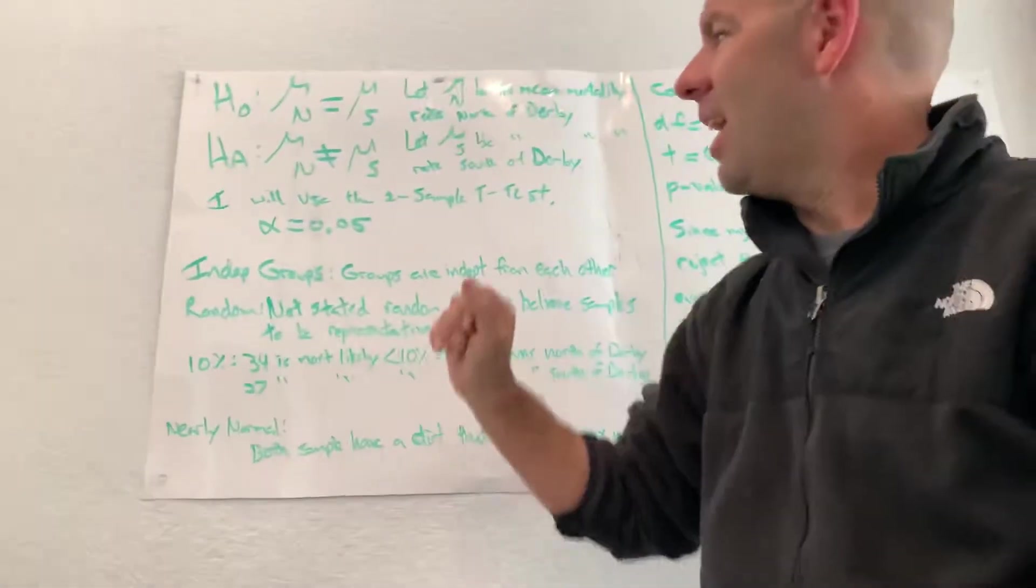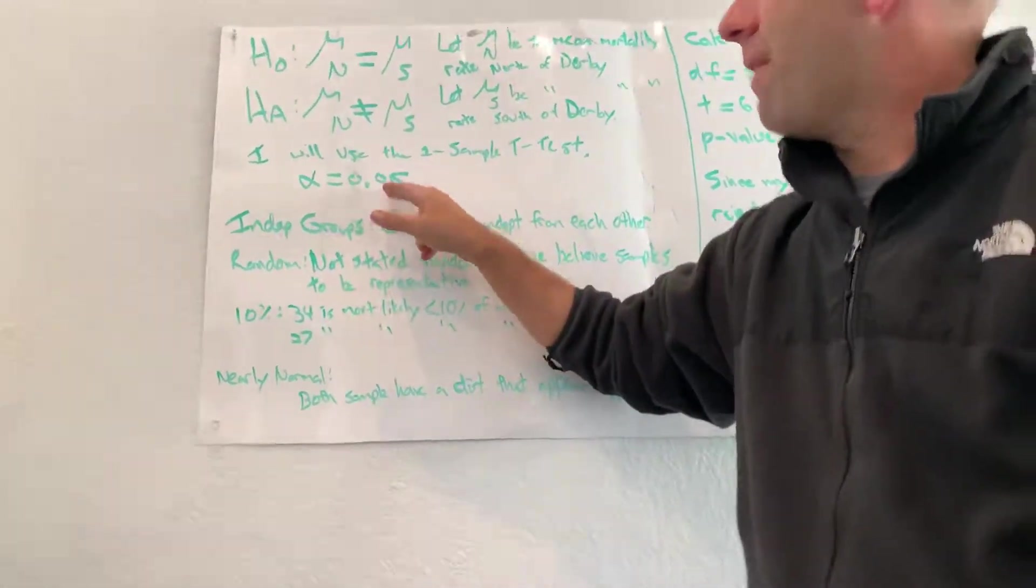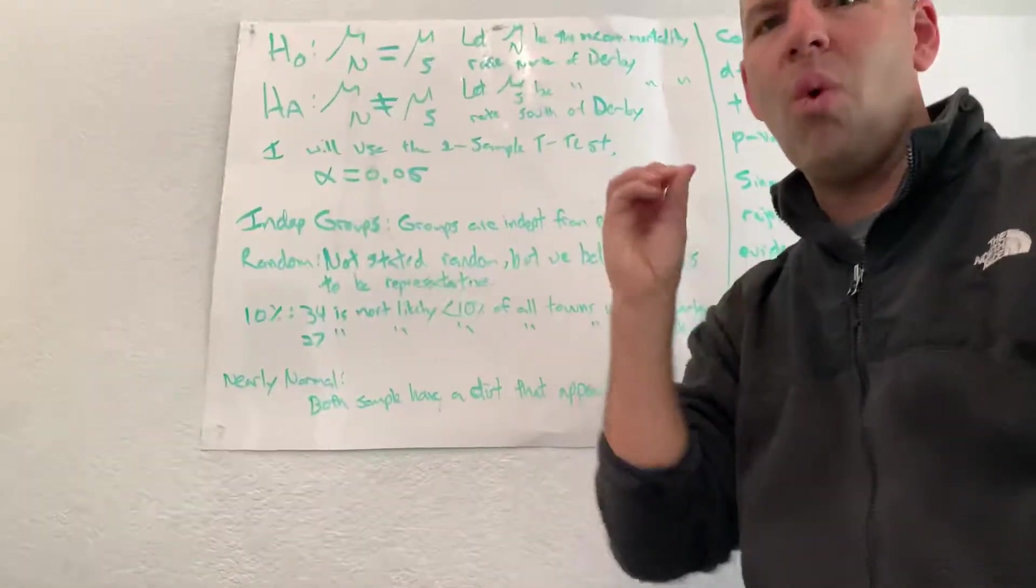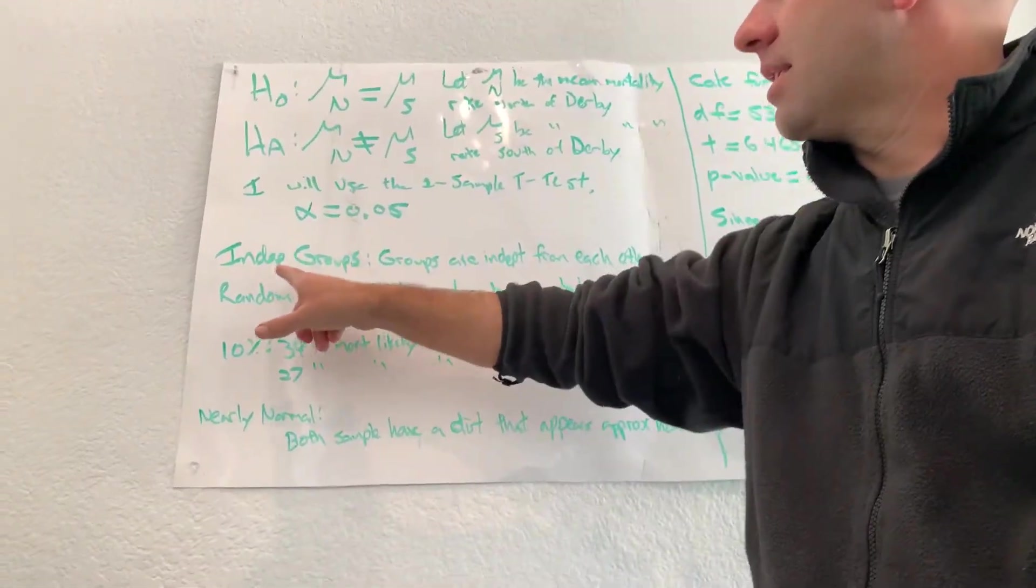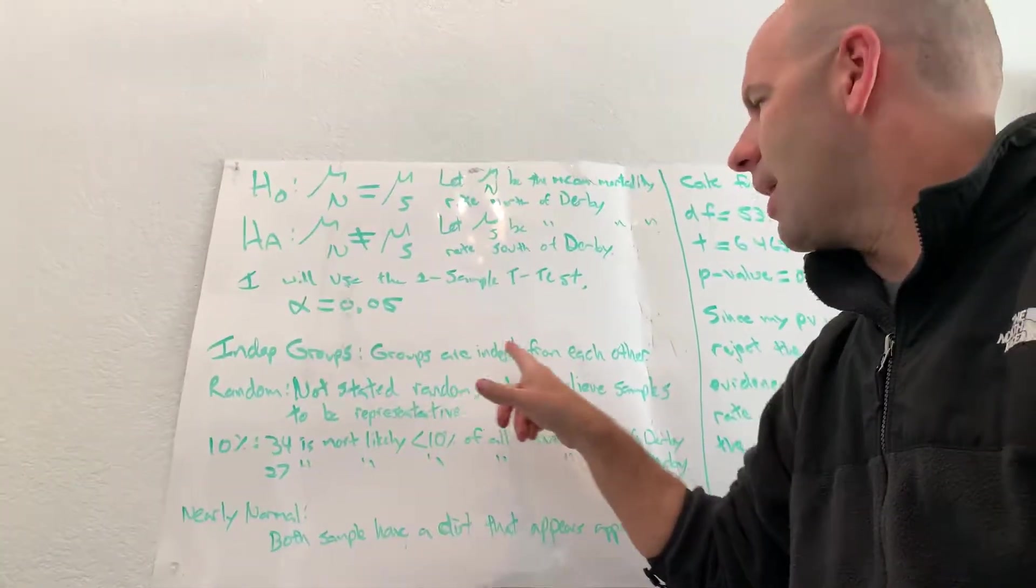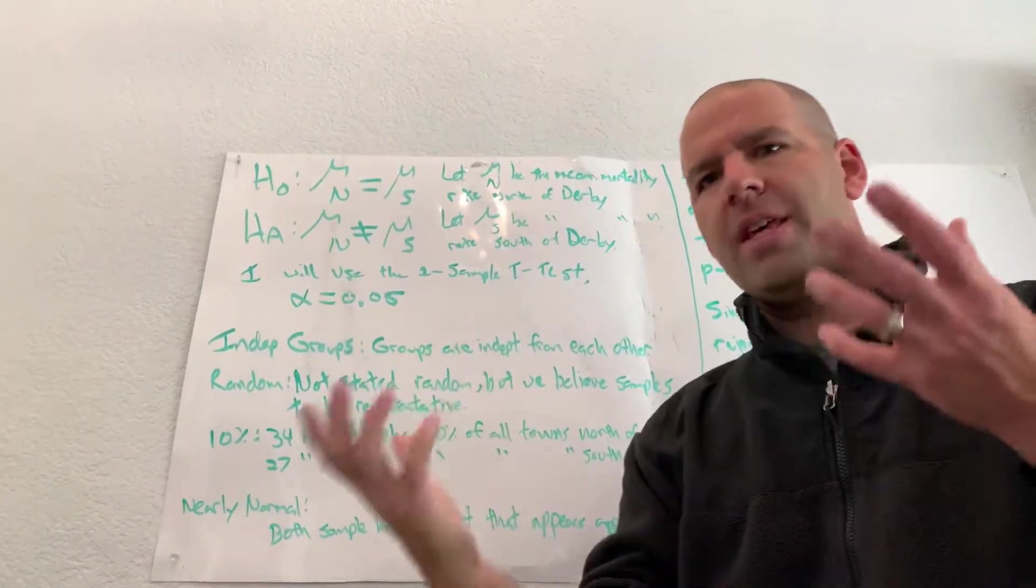I will use a two-sample t-test with an alpha of five percent. And here's the key reason why I'm doing a two-sample t-test: it's that independent groups.